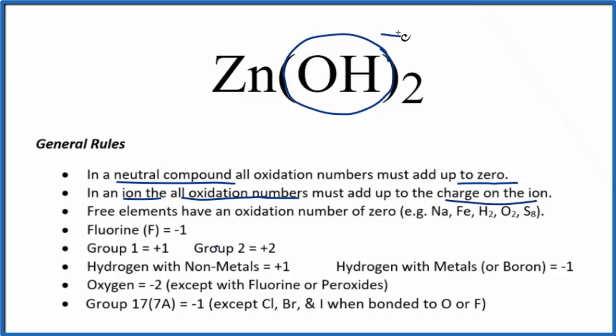Two times the minus one, this has to be plus two. So we could figure out the charge on the zinc by looking at the hydroxide ion.